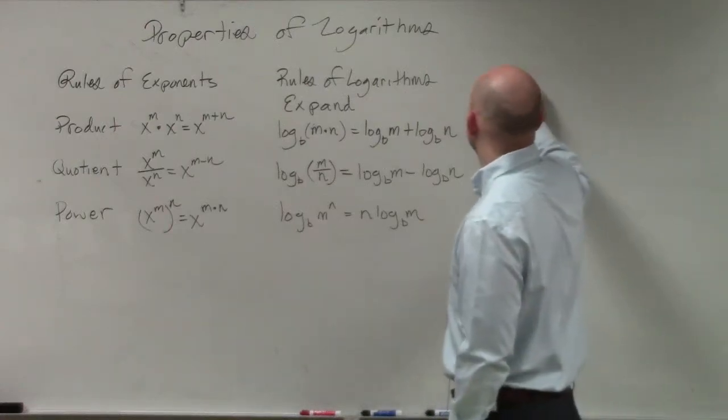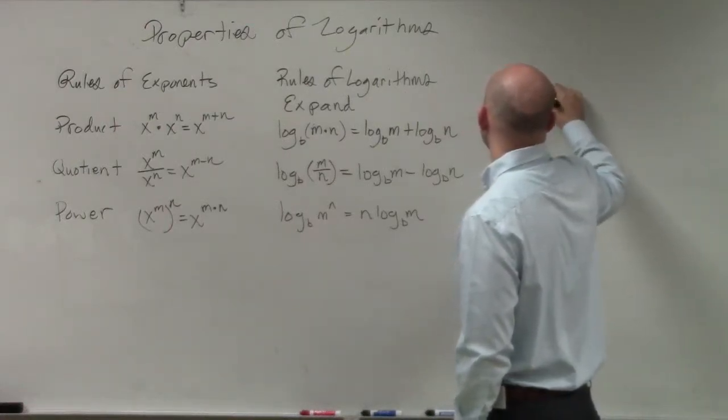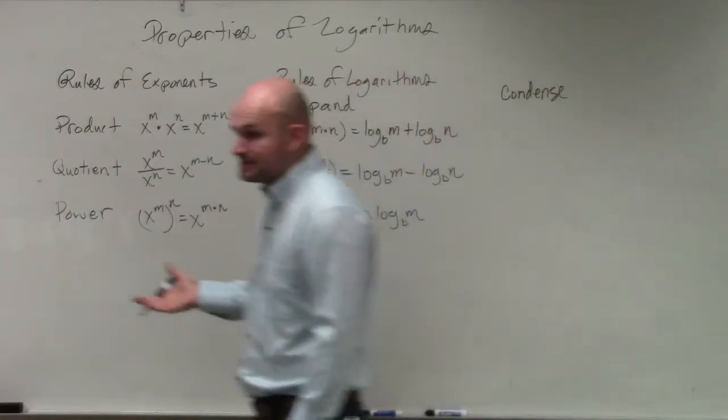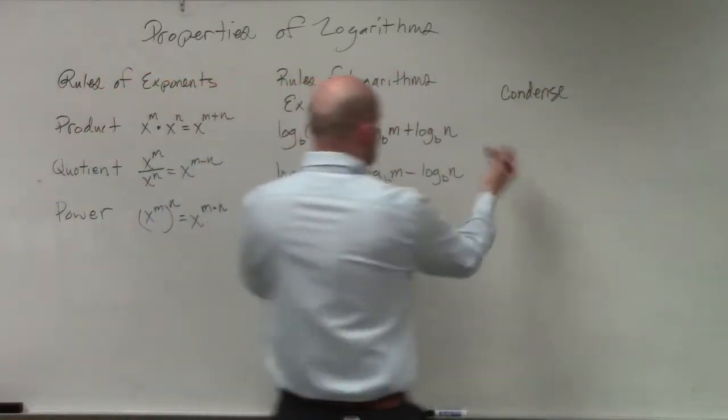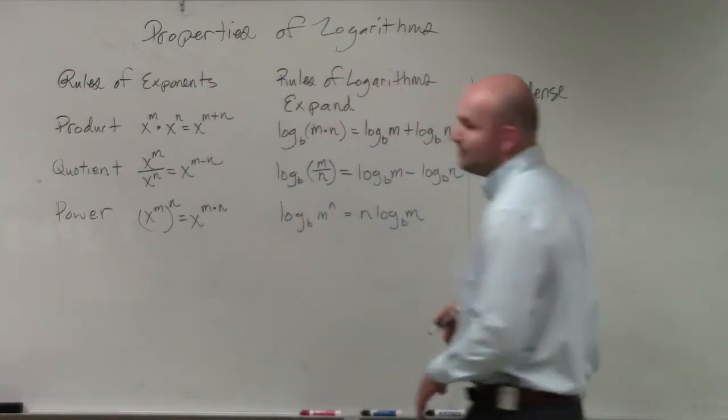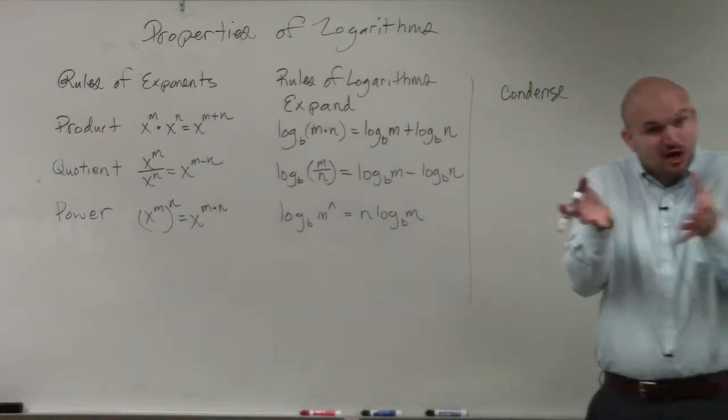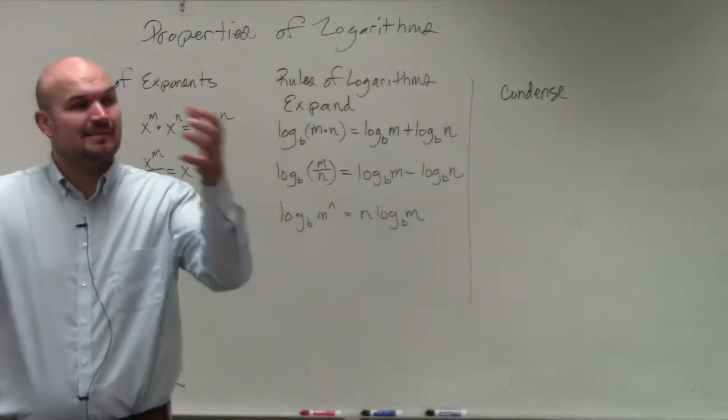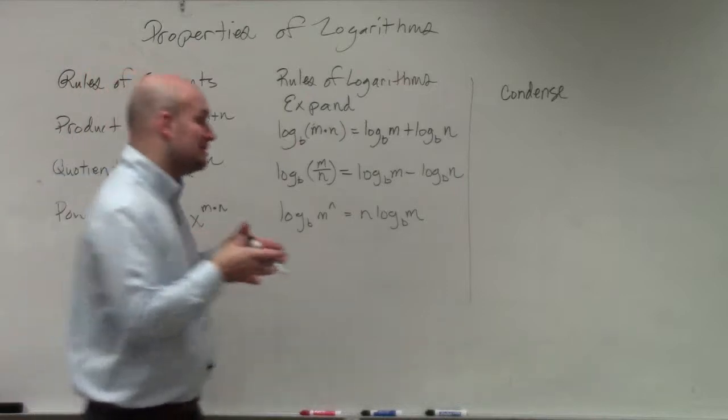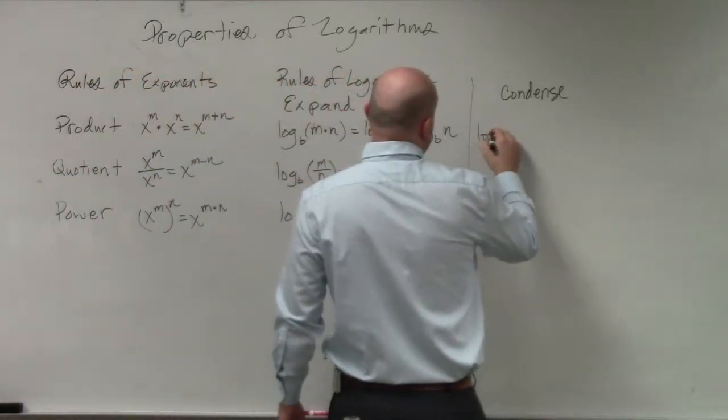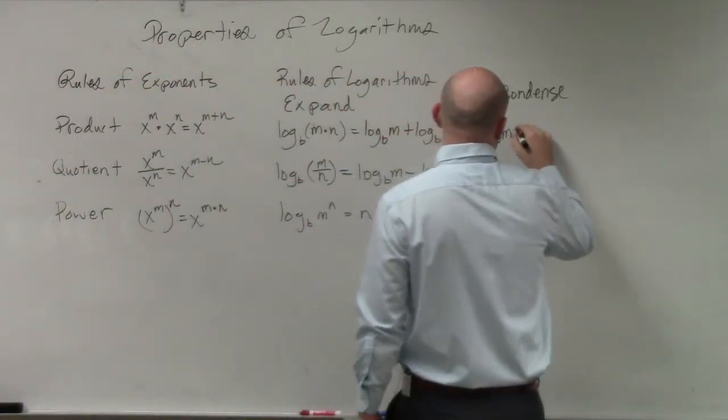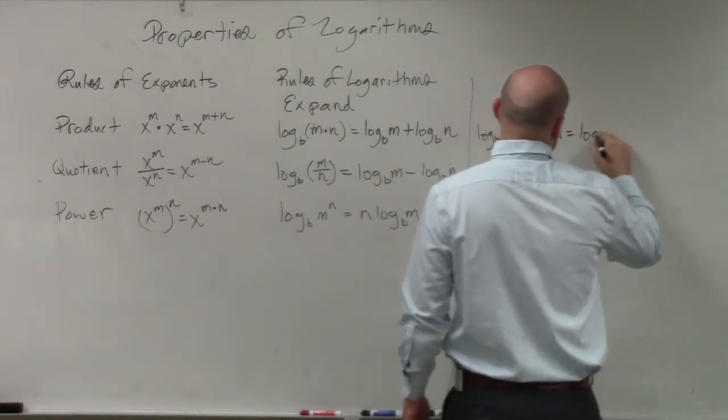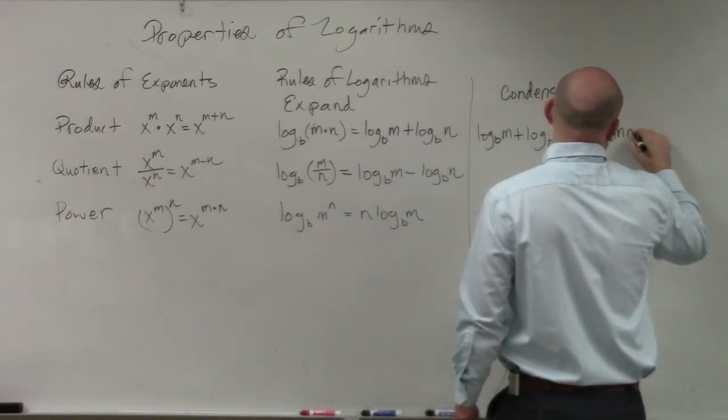However, there's also another way that we can look at these, which is the condensing form. We'll be practicing doing both of these both ways. So all it is is me just swapping these around. But I want you guys to understand, because if you have two logarithms, this comes up a lot when we're solving. If you have two logarithms, a lot of times to solve, we need to get them as one basic logarithm. So if you see that you have log base b of m plus log base b of n, that equals log base b of m times n.